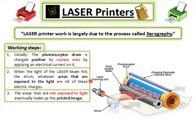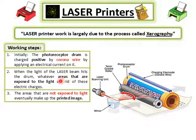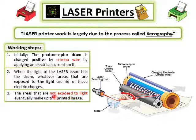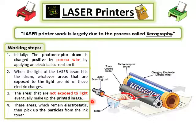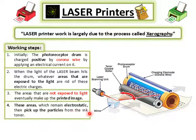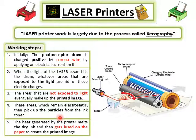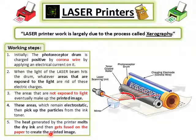The areas on the photoreceptor drum where light hits are neutralized. The areas not exposed to light remain positively charged and make up the printed image. These remaining electrostatic areas then pick up particles from the ink toner. Finally, the heat generated by the printer melts the toner and it gets fused onto the paper to create the printed image.